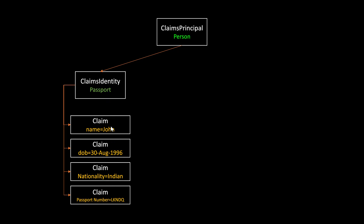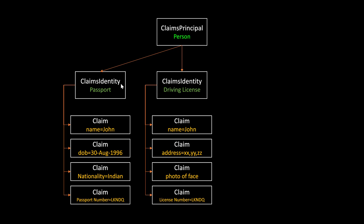So ultimately a claim is a fact or a statement about the user, and claims identity contains the claims about the user. Now if the same person is traveling on road, an officer can ask for his driving license. The driving license is also a claims identity because it contains the claims about the user — like name, address, photo, license number, etc. So a driving license also contains the identity information or the claims about the user, so it is also a claims identity.